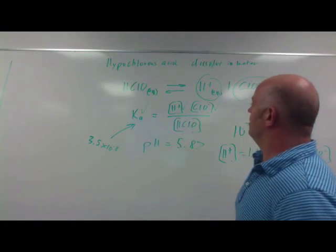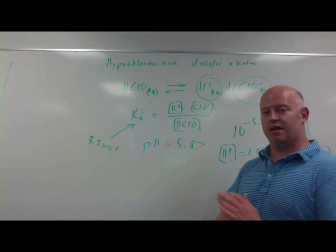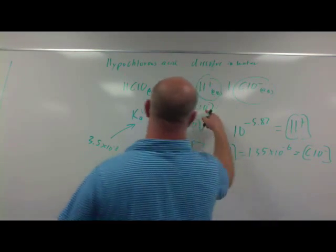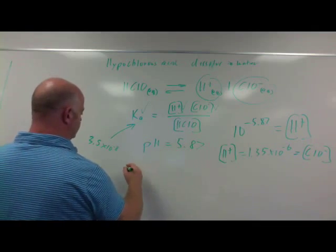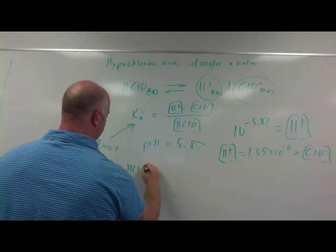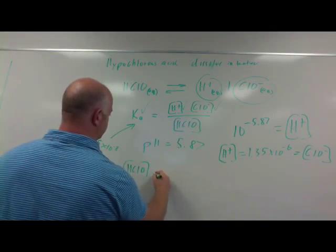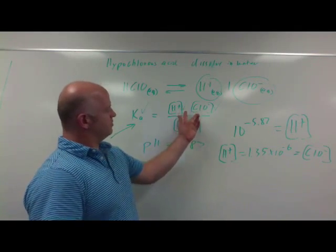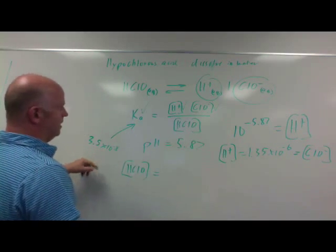That tells me I now have this value, I now have this value, and I have this value, so one thing I'm missing is this. A little algebra will take care of the last part. We'll rearrange our equation and we can say that the HClO concentration should be equal to the concentration of these two things divided by the Ka.